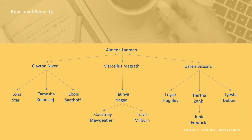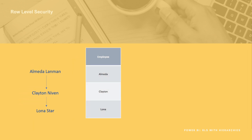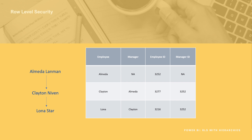Here's our organization but we're going to focus on three people to understand the concept: Almeda, Clayton and Lona. We have a table of data with their three names. We also have their manager names, and because it's easier to work with integers rather than strings we're going to use the employee ID and manager ID. This is going to be used to build a path which will be used for the security filter.